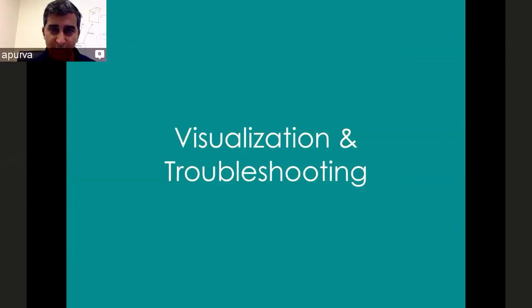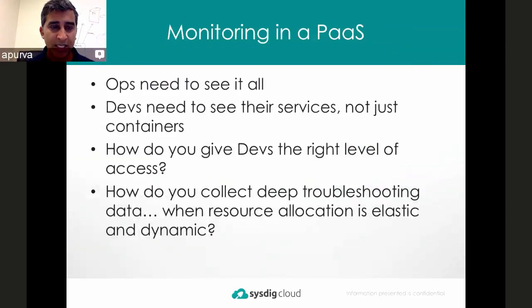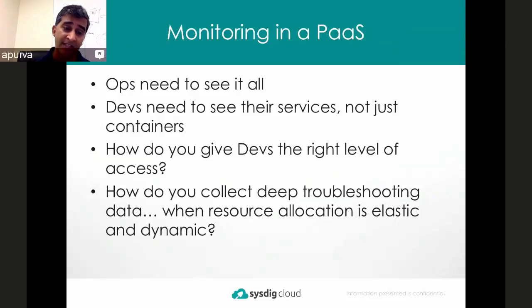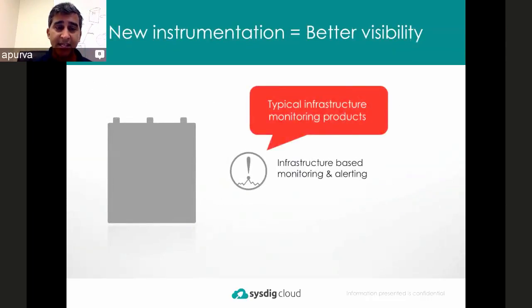In a container application platform, you've got two tiers of users. You have ops or DevOps who needs to see everything — the entire platform, the performance of all systems at once. And you have teams of developers who need to see their services or applications, not just their containers. How do you give developers the right level of access? And more importantly, how do you give developers the ability to collect deep troubleshooting data when you don't want to give them access to the underlying platform, and resource allocation is elastic and dynamic — the developer does not actually know where their container will be running, yet they're responsible for understanding why their application isn't performing.